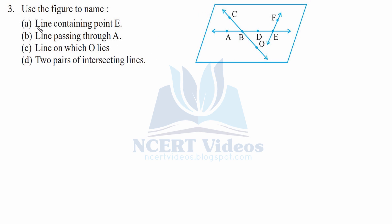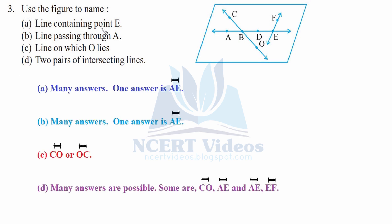Question three: use the figure to name the following from parts a to d. Part a, line containing point E — one answer from the figure is line AE. Part b, line passing through A — one answer is AE, another could be AD. Part c, line on which O lies — O lies on OC, which can also be written as CO, giving two possible answers: CO and OC.